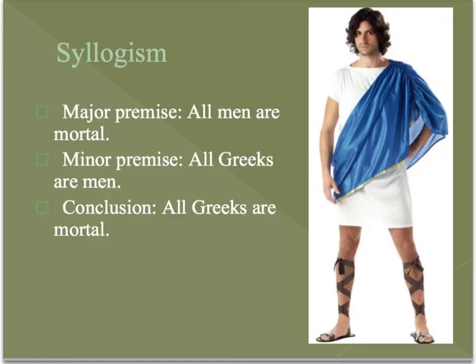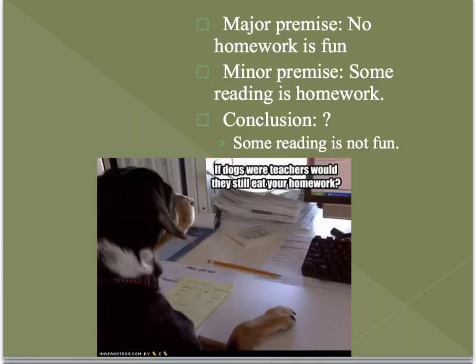Here's an example of a syllogism. It's based on a major premise, a minor premise, and a conclusion. These don't have to be true, but you want them to be. Major premise: all men are mortal. Minor premise: all Greeks are men. Conclusion: all Greeks are mortal. Another example — major premise: no homework is fun. Minor premise: some reading is homework. Conclusion: some reading is not fun.